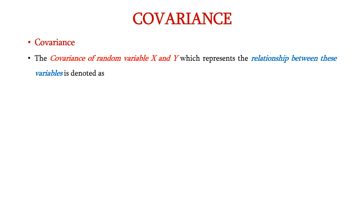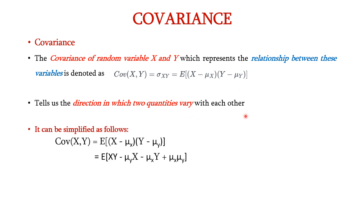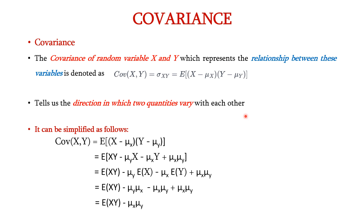Next, covariance. The covariance of random variables x and y, which represents the relationship between these variables, is denoted as E of x minus mu x into y minus mu y. It tells us the direction in which two quantities vary with each other. This can be simplified: taking the formula x minus mu x into y minus mu y, we multiply these terms and write x y minus mu y x minus mu x y plus mu x mu y.